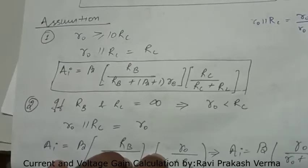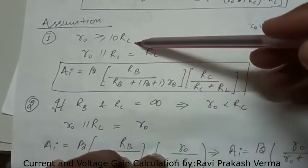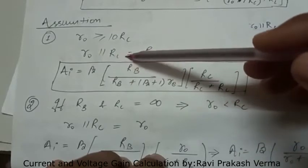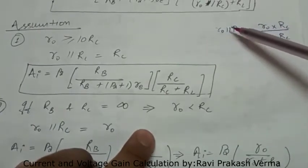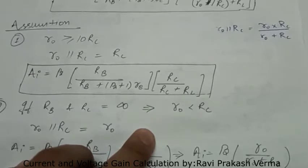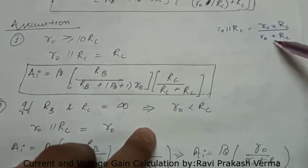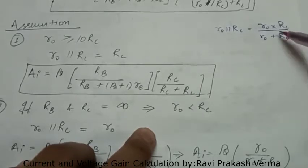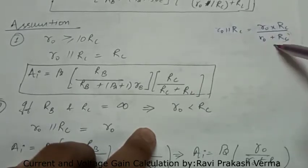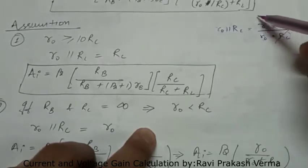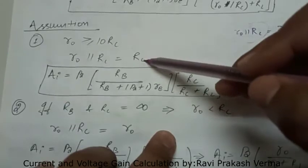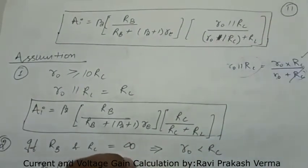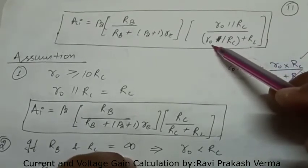There are two cases in this current gain equation. In the first approximation, if R naught is greater than or equal to 10 times RC, then R naught parallel RC equals RC. We can see that if R naught is greater than 10 times RC, we can neglect RC compared to R naught; R naught will cancel out and the whole expression equals RC.